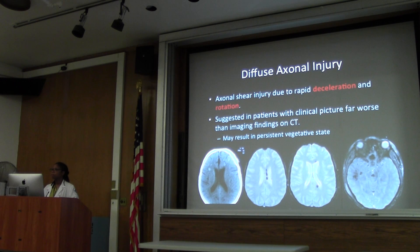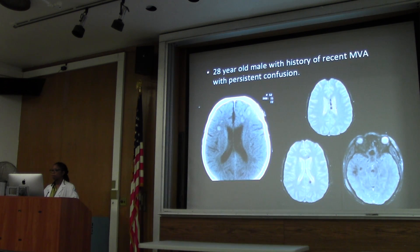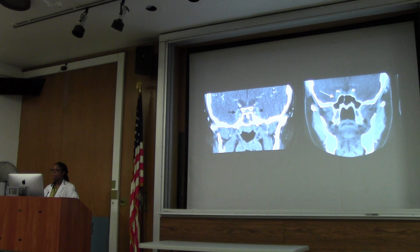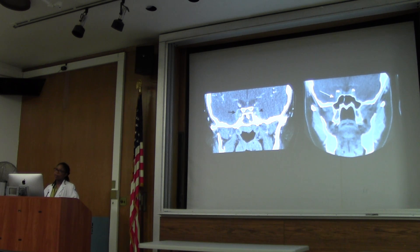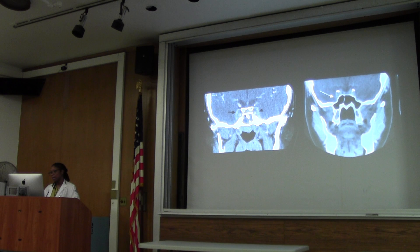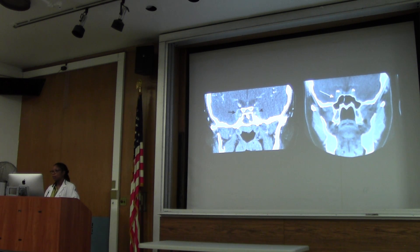A question about cavernous sinus thrombosis: what is the best imaging modality of choice in the ER? CT venogram will still be the fastest - MRI will take longer. So for speed, definitely the CT venogram. Is MRI more sensitive? It's about equal, but it comes down to what you can get faster. Certainly if the patient is pediatric or pregnant, then MRI would be what we go with. But CT is quite efficacious in diagnosing that entity.